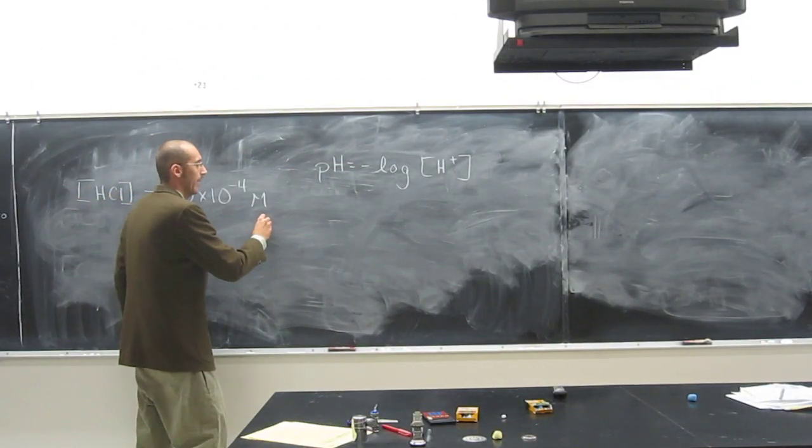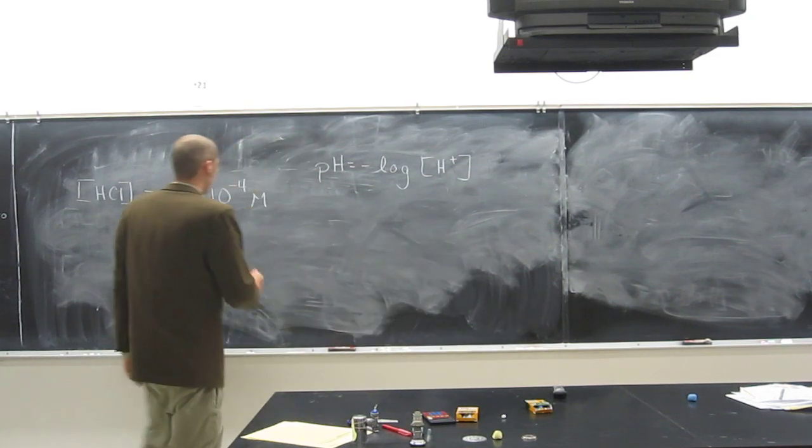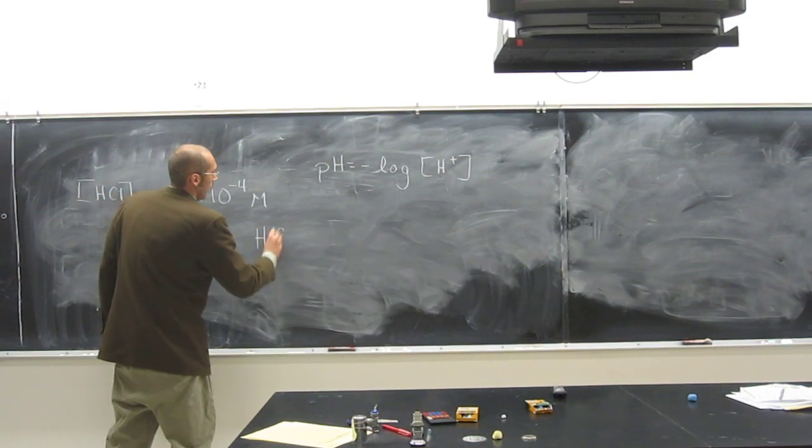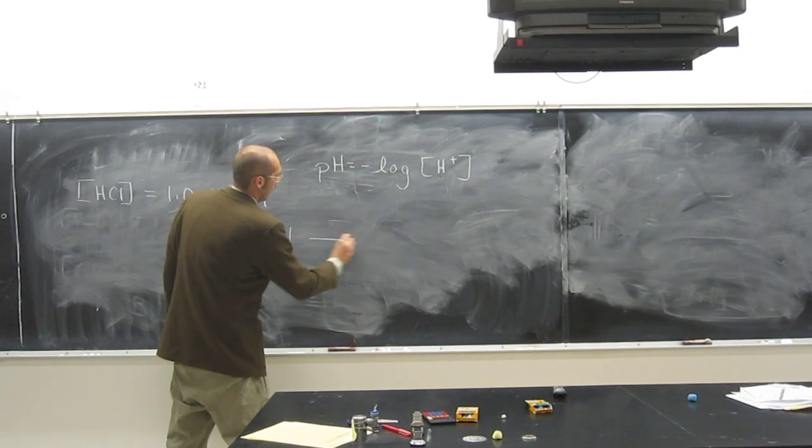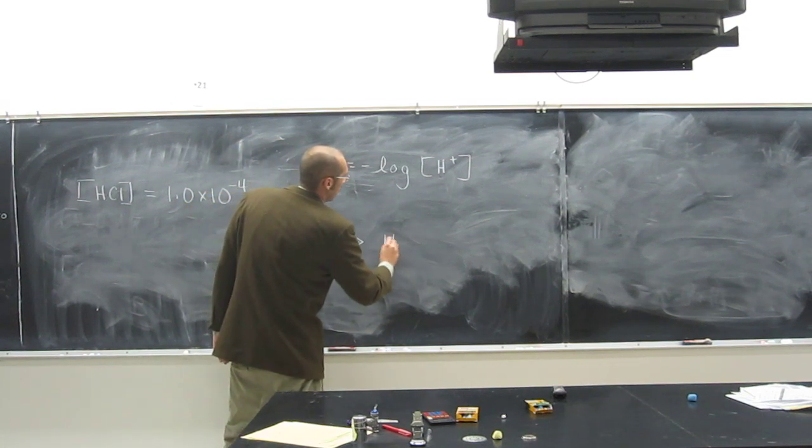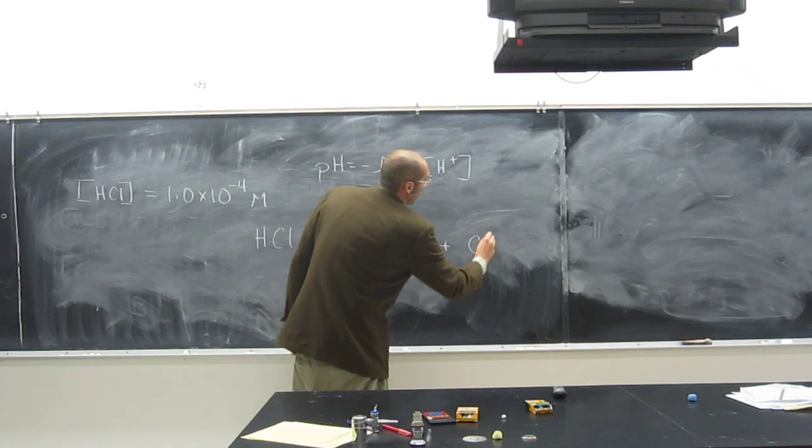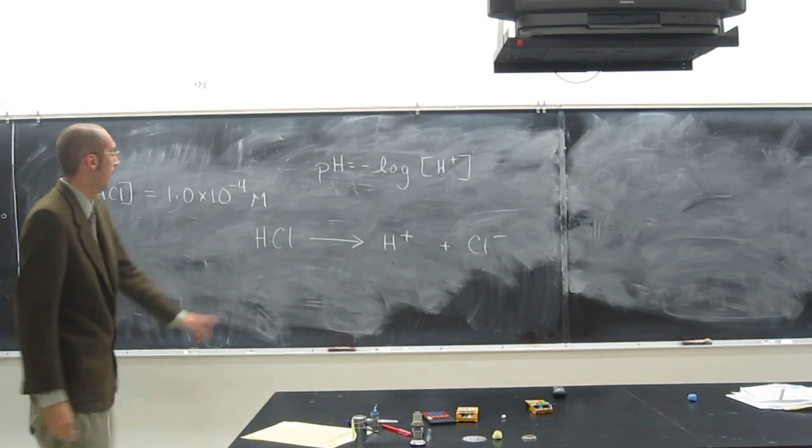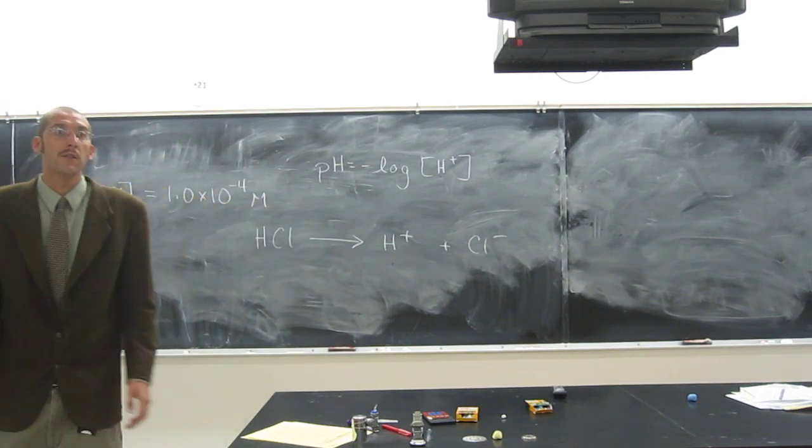So, let's do the reaction equation. And again, H plus, H3O plus, same thing, right? HCl. We'll just do the easy one, right? So, it breaks up into H plus, plus Cl minus, like that, okay? And it's a straight arrow, because it's a strong acid, completely dissociates.